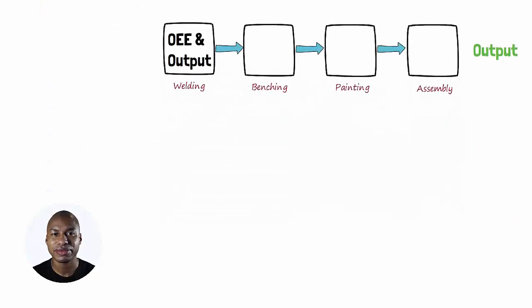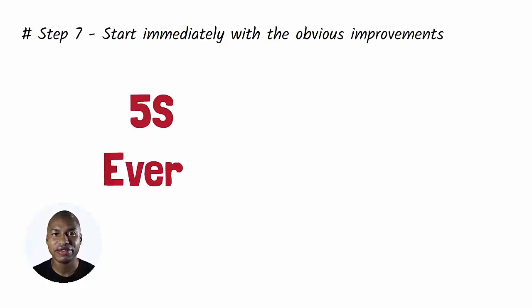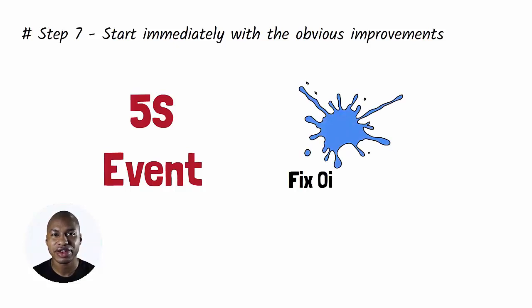Step 7. Start immediately with the obvious improvements. There is no need to wait for too much data to do a 5S event, fix leaking pipes, or make sure there are always operators available. Get started with these Kaizen.